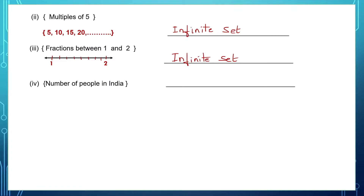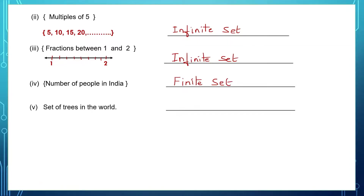Question 4: number of people in India. The number of people in India can be counted. So this is a finite set. Question 5: set of trees in the world. There are many trees in the world and that will form an infinite set — you cannot count them. Infinite set.